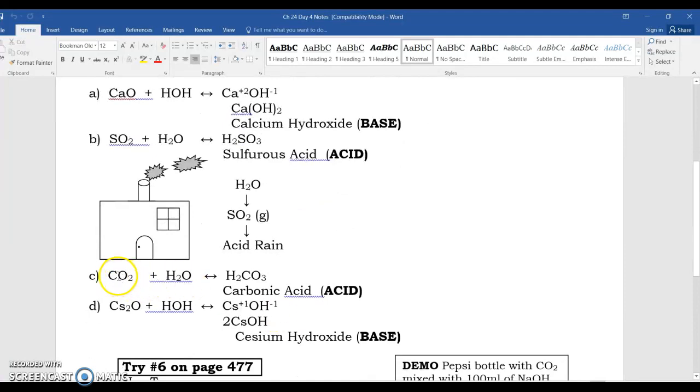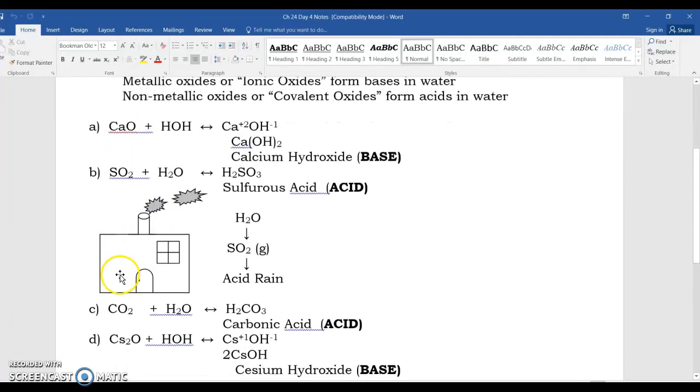Here's some other examples. Carbon dioxide, which is also found in the atmosphere, which is a non-metal. A non-metal makes an acid, carbonic acid. Remember, it's a non-metal or non-metallic oxide in water, it makes acid.